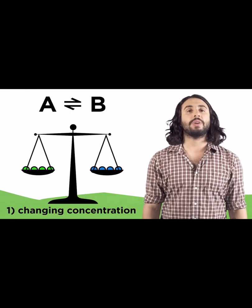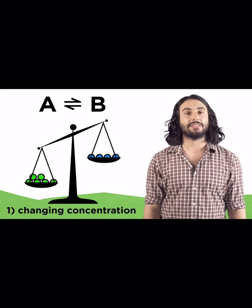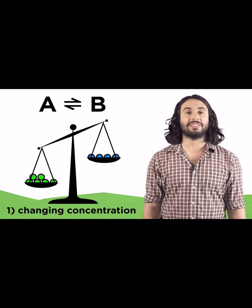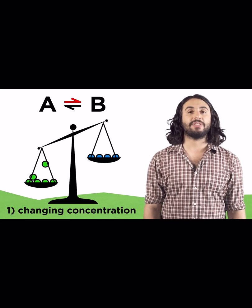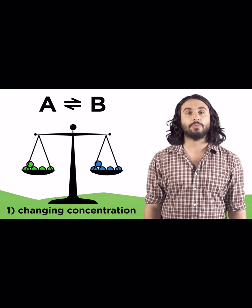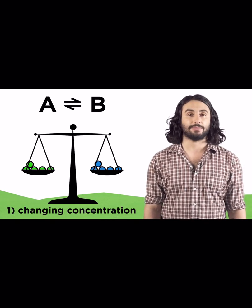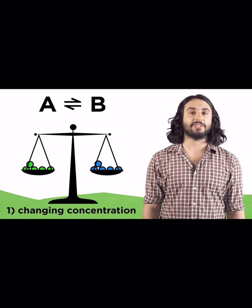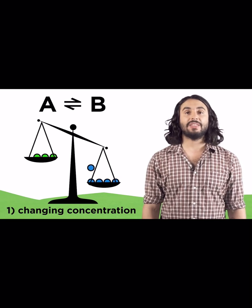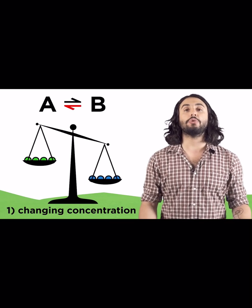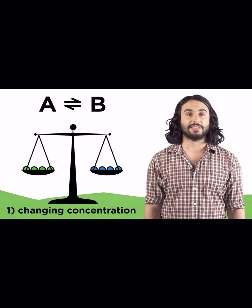First, we could modify the concentration of any of the compounds. Let's say we add some of this reactant—that will unbalance the equilibrium and the forward reaction will speed up to use up some of the additional reactants, turn them into products, and restore equilibrium. The equilibrium is said to have shifted right. If we add more products it would shift left. Likewise, if we selectively remove one of the components, the equilibrium will shift to produce more of that species to restore balance.